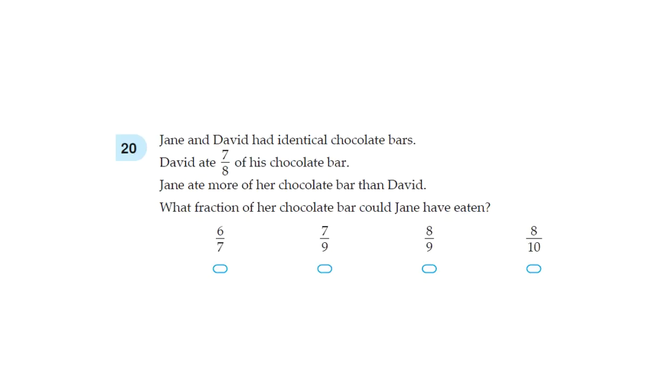Next one. Jane and David had identical chocolate bars. David ate 7 eighths of his chocolate bar. Jane ate more of her chocolate bar than David. What fraction of her chocolate bar could Jane have eaten?